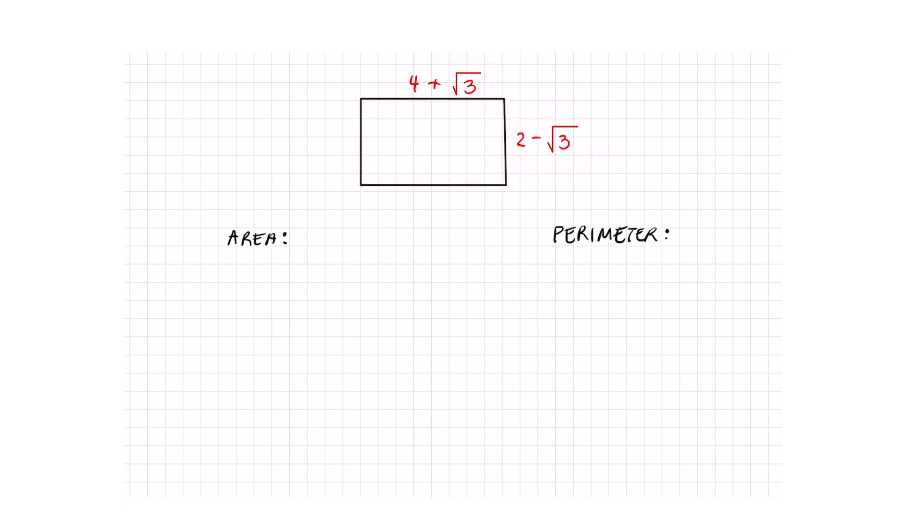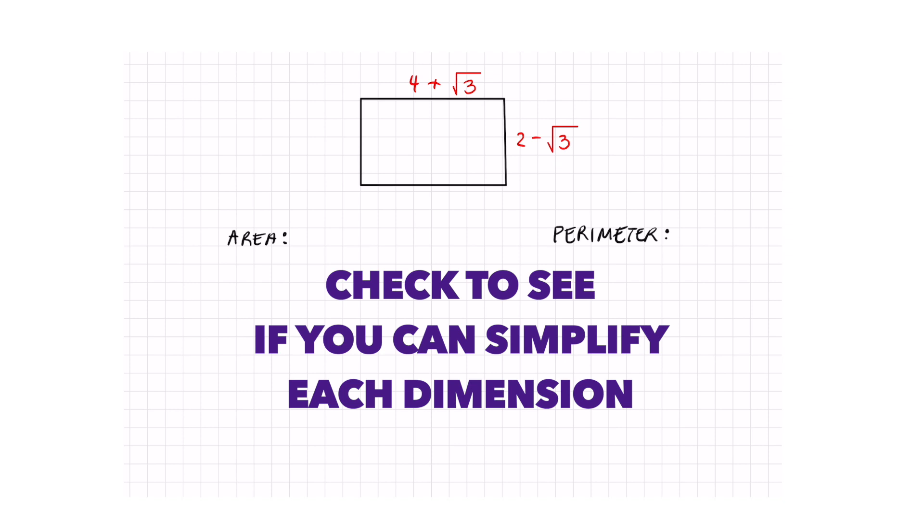This one's a little different from my other video because this one has a whole number and a square root for its given dimensions. When I'm finding the area and perimeter, I always want to check to see if I can simplify something to begin with.